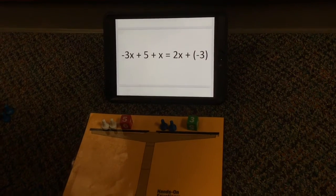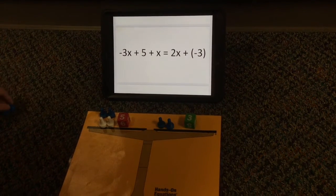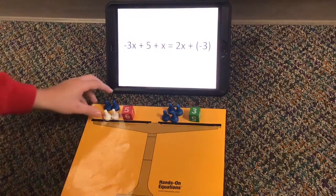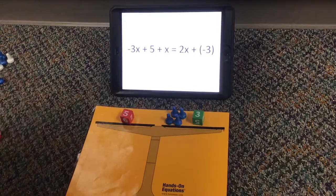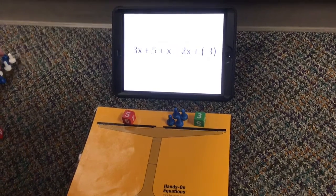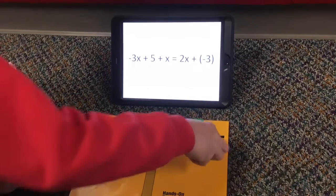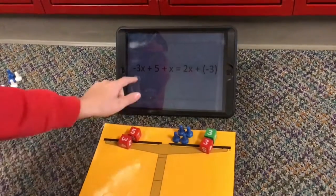And then now to get rid of the opposite of 2x we can add positive 2x to each side. So now this would be a pair of zero so we can take that away. And then now we have to get rid of the negative 3 by adding positive 3 to each side so we can get a pair of zero so each side can be even.